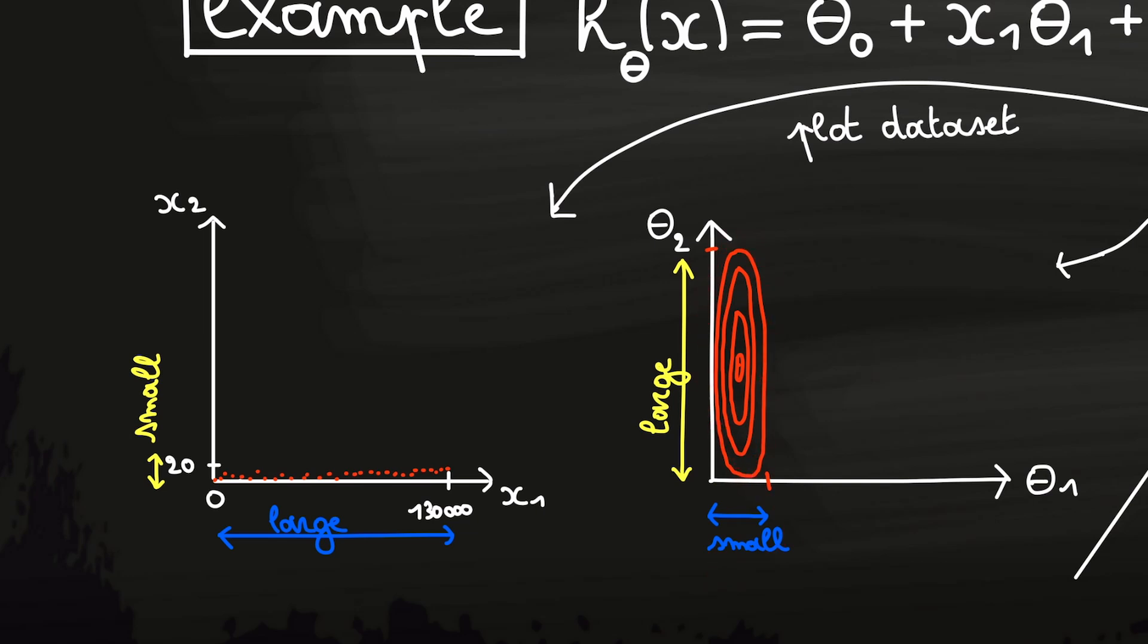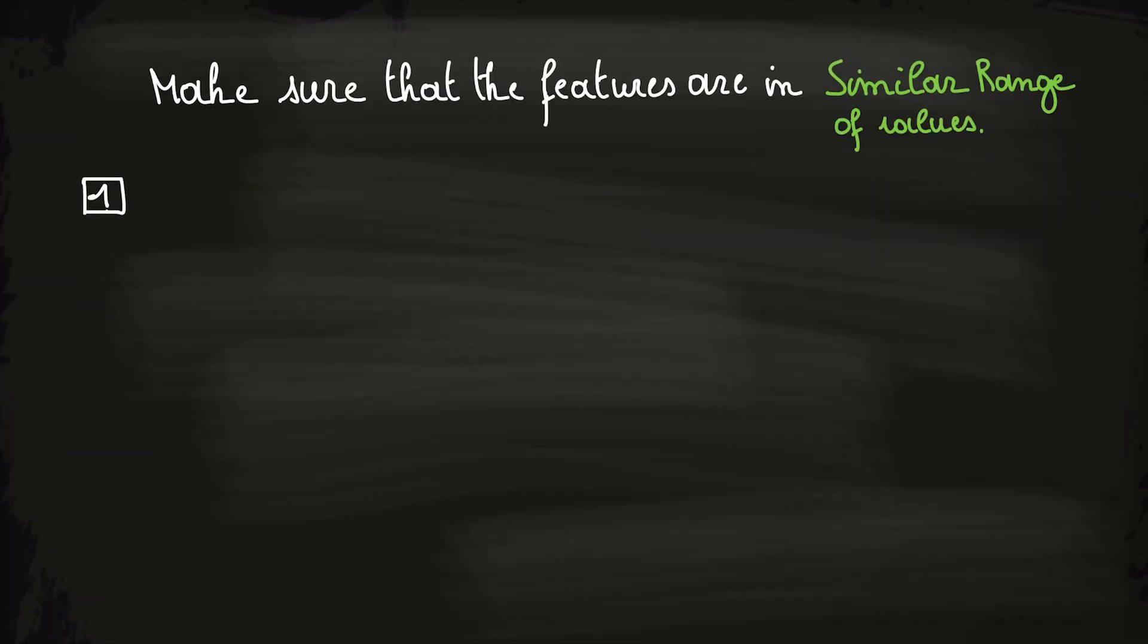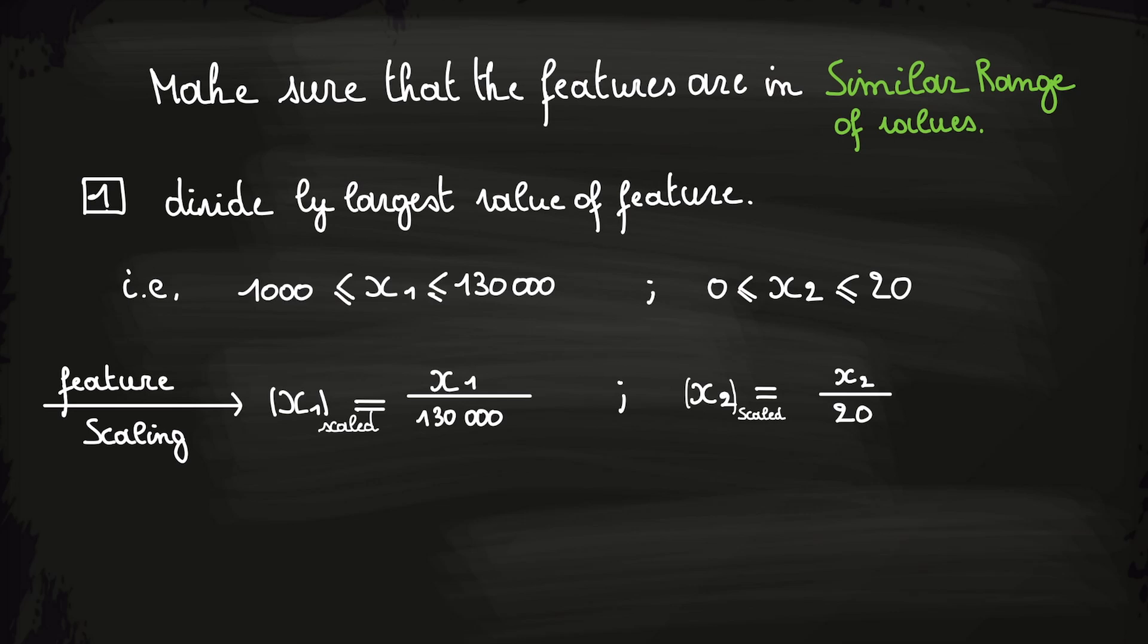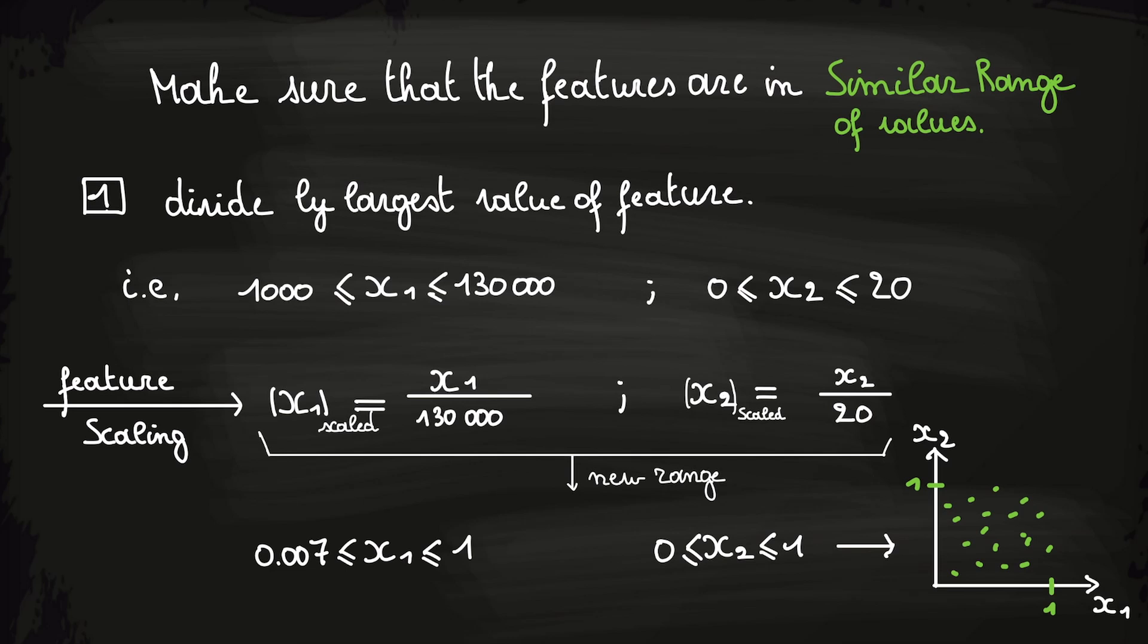So, what we want to do is to make sure the features are in a same range of values. One way to do this is to divide the features by the largest value of that feature in our training set. For example, the largest mileage that occurs in our training set is 130,000 and the smallest mileage is 1,000. Also, the largest age is 20 and the smallest age is 0. Now you should scale x1 and x2 as follows. You divide them by the largest value of that feature that occurs in the training set. This way we will get a dataset that has features in a similar range and thus we will get a dataset that might look like this. Now the contour plot will look more like a circle and thus gradient descent can converge faster.